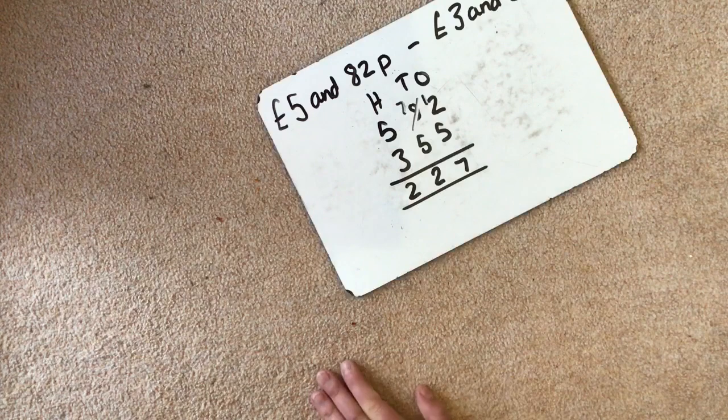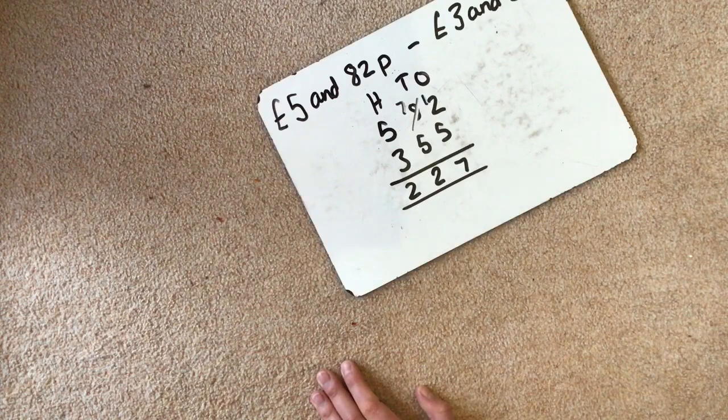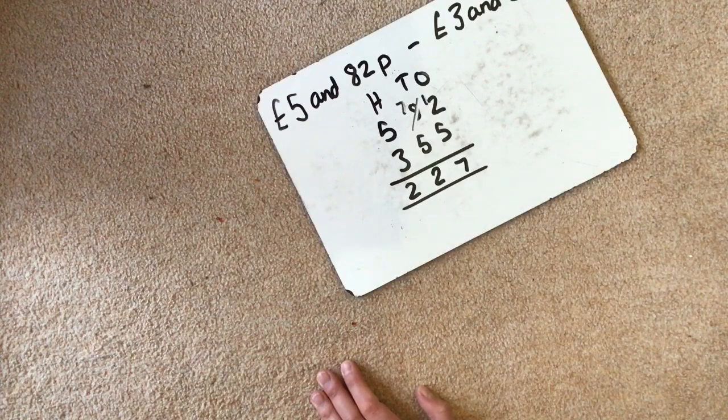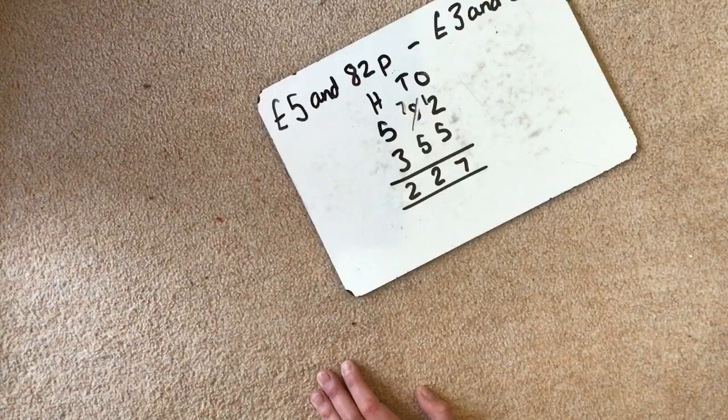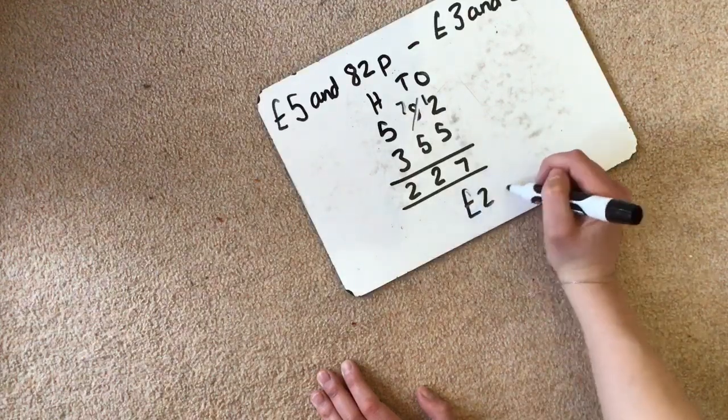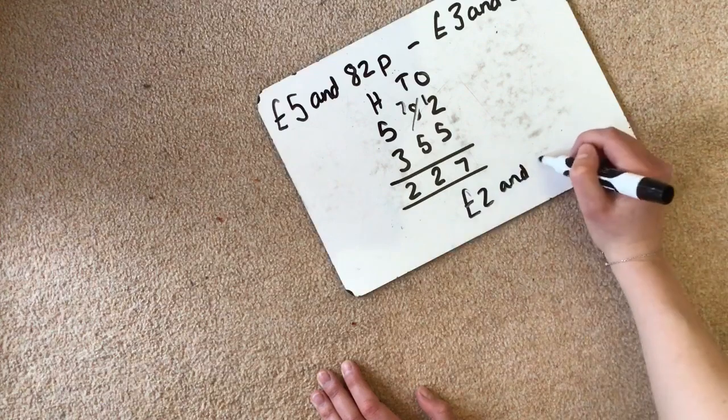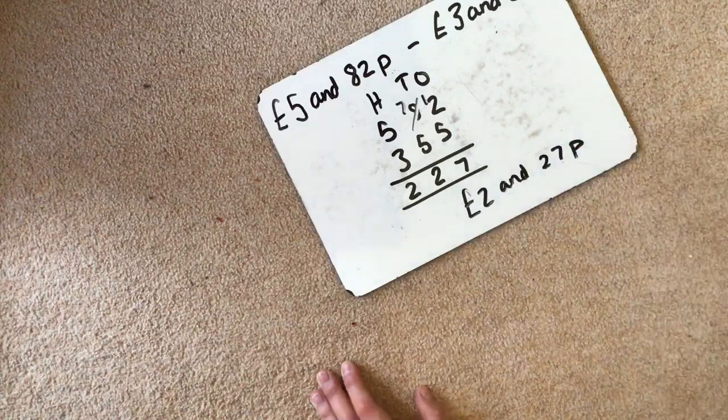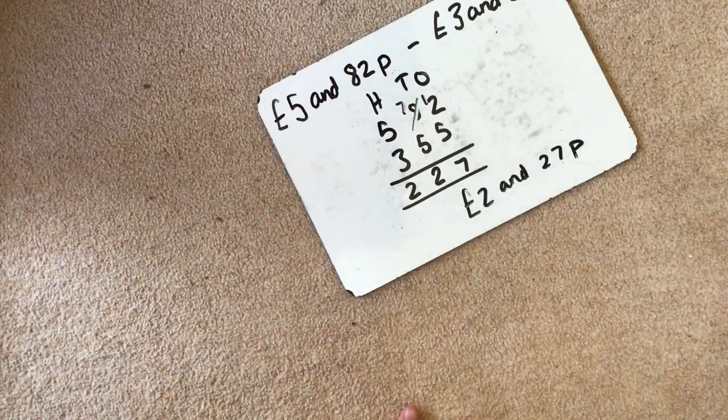And then we have 5 take away 3 and we know that is 2. So the answer to this question, £5.82 take away £3.55 is 227 pence or £2.27. So that is how you do column subtraction.